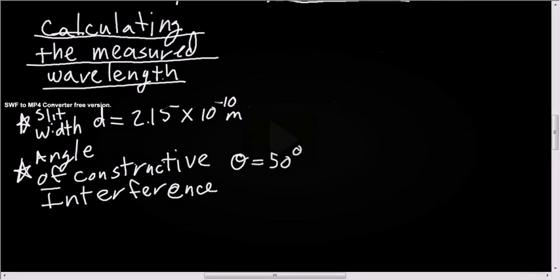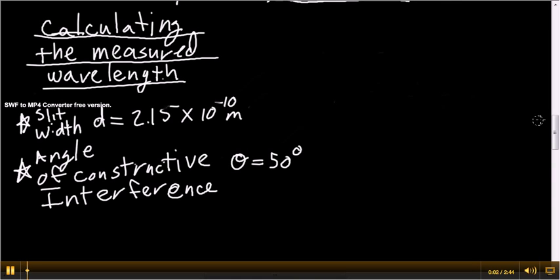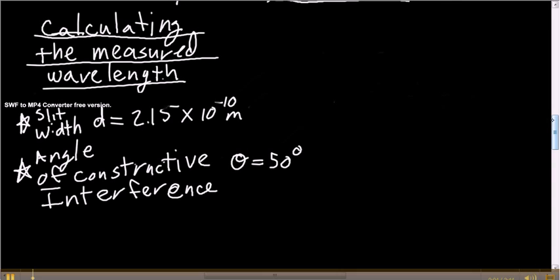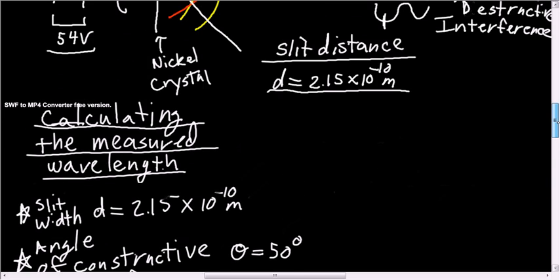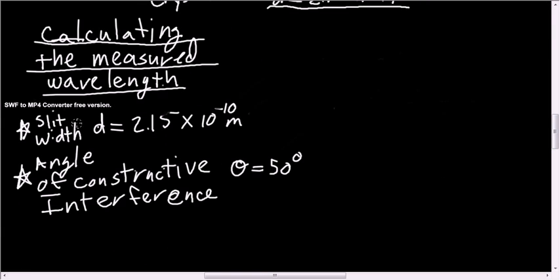So how can we do that? So the information we got from the Davisson, from the figure above, the slit width, the distance in between the atoms of the nickel and the crystal, and the angle to the first line of constructive interference.